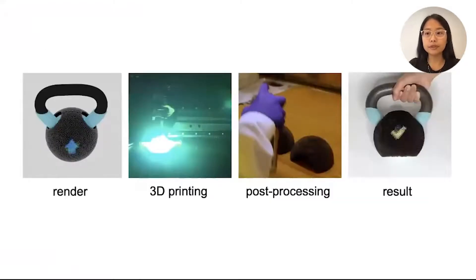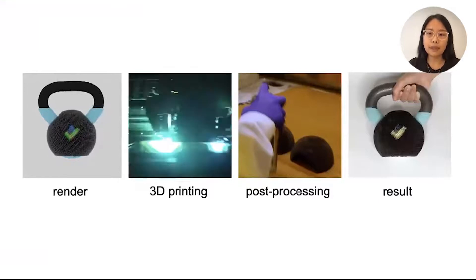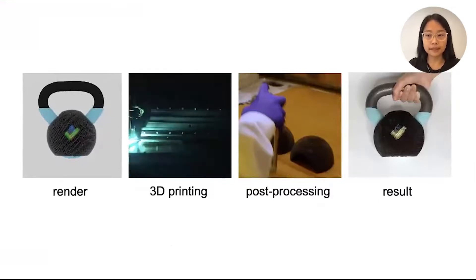After making the 3D models, users can fabricate their objects. In the case of the kettlebell shell example that I've just created, I first use a renderer to preview the lenticular effects. I then 3D print the object, the lenses, and the color pattern all in one pass.